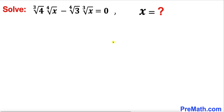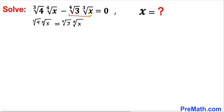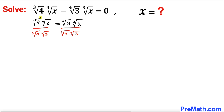Let's go ahead and get started with the solution. The very first thing we are going to do is move one part of this equation to the right hand side. Now let's manipulate this equation by dividing both sides by the cube root of 4 times the 4th root of 3.